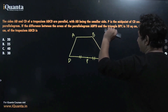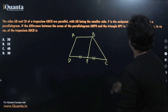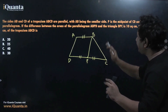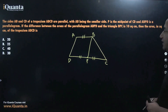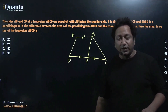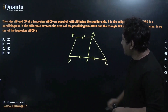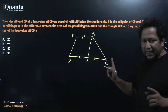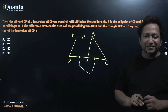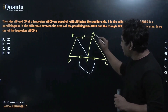ABPD is a parallelogram, so joining P and B gives us parallelogram ABPD where AB equals PD. The question states that the difference between the areas of parallelogram ABPD and triangle BPC is 10 square centimeters, and asks for the area of trapezium ABCD. This question is beautiful — it depends entirely on imagination and visualization, with no formula needed.